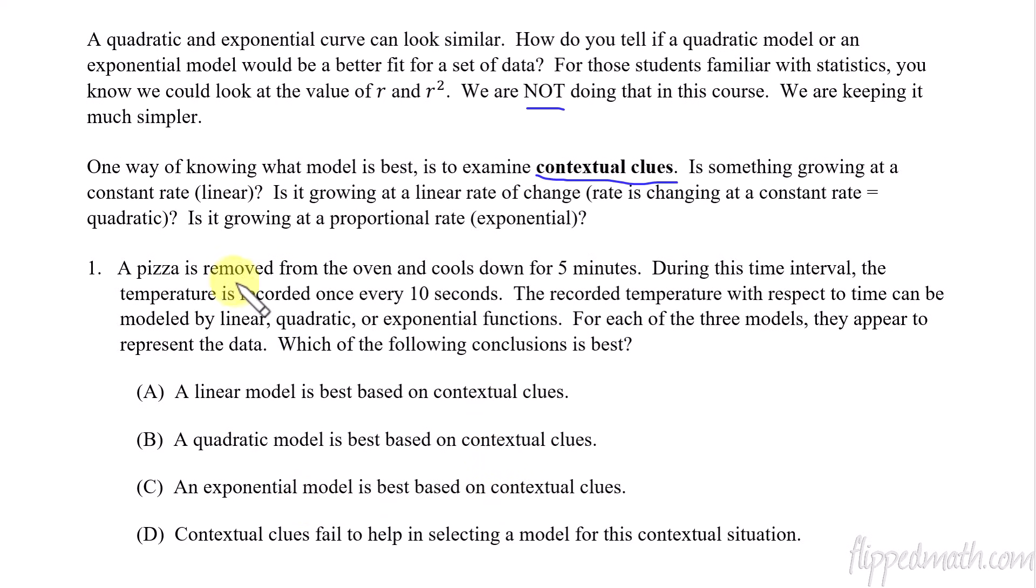And so what we're trying to figure out is for each of those three models, if they all appear to represent the data, how do we know which one's the best? So as you look at these options here, we've got a linear model is best, quadratic, exponential, but is it best based on what? Contextual clues. The contextual clue is your knowledge of these types of problems and how they work. A pizza that's really hot is when it cools down. That's actually what's called Newton's law of cooling.